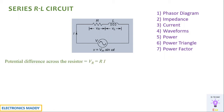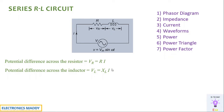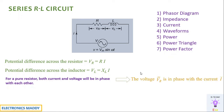We are connecting an AC supply across a series RL circuit. Assume the voltage drop across the resistor is VR and across the inductor is VL. The voltage drop VR equals I times R, according to Ohm's law. The voltage drop VL equals I times XL, as derived in previous videos. For a pure resistor, current and voltage are in phase with each other, so VR is in phase with current I.